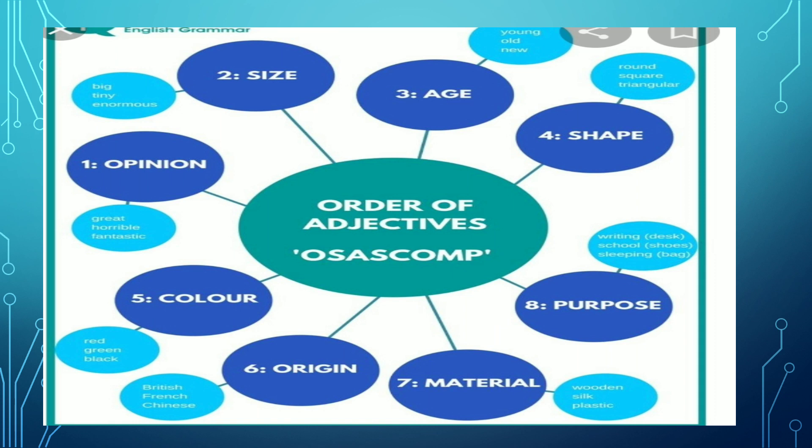Here are the order of the adjectives. First one is opinion. Then size, age, shape, purpose, material, origin, and color — these all come under an adjective.